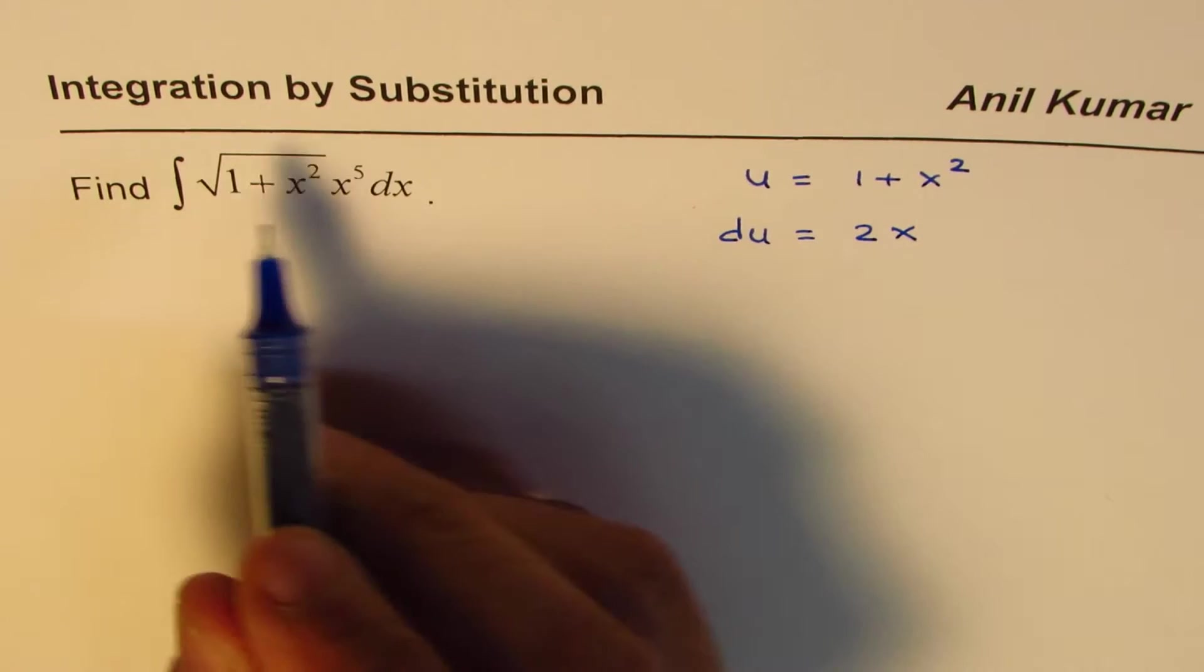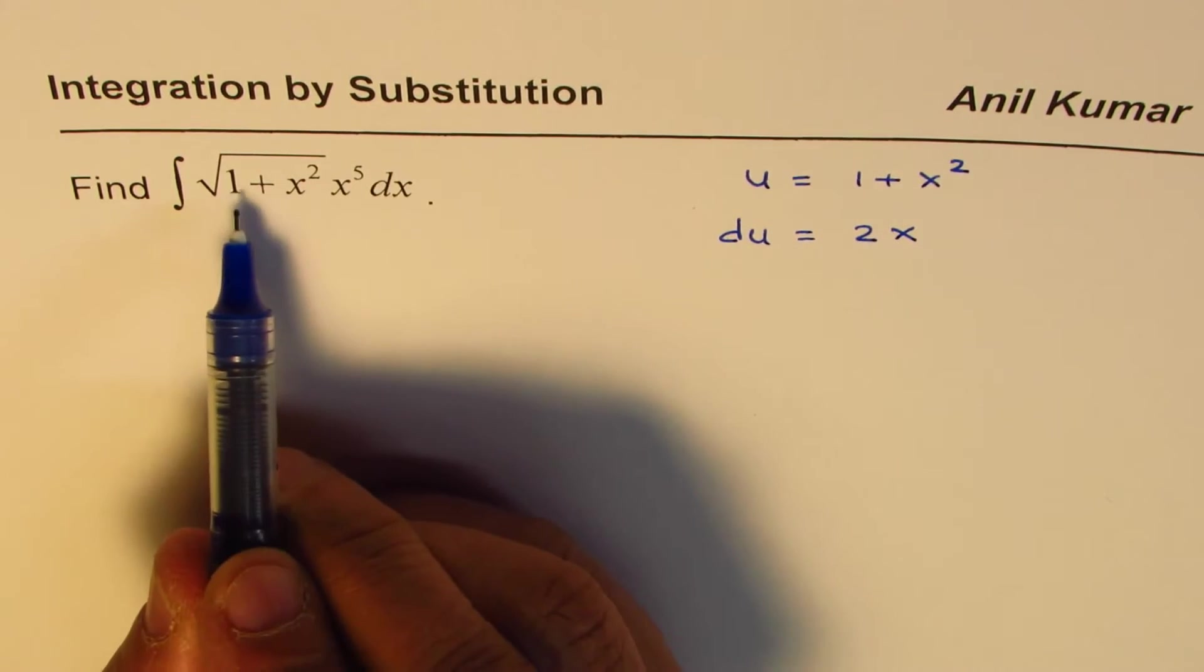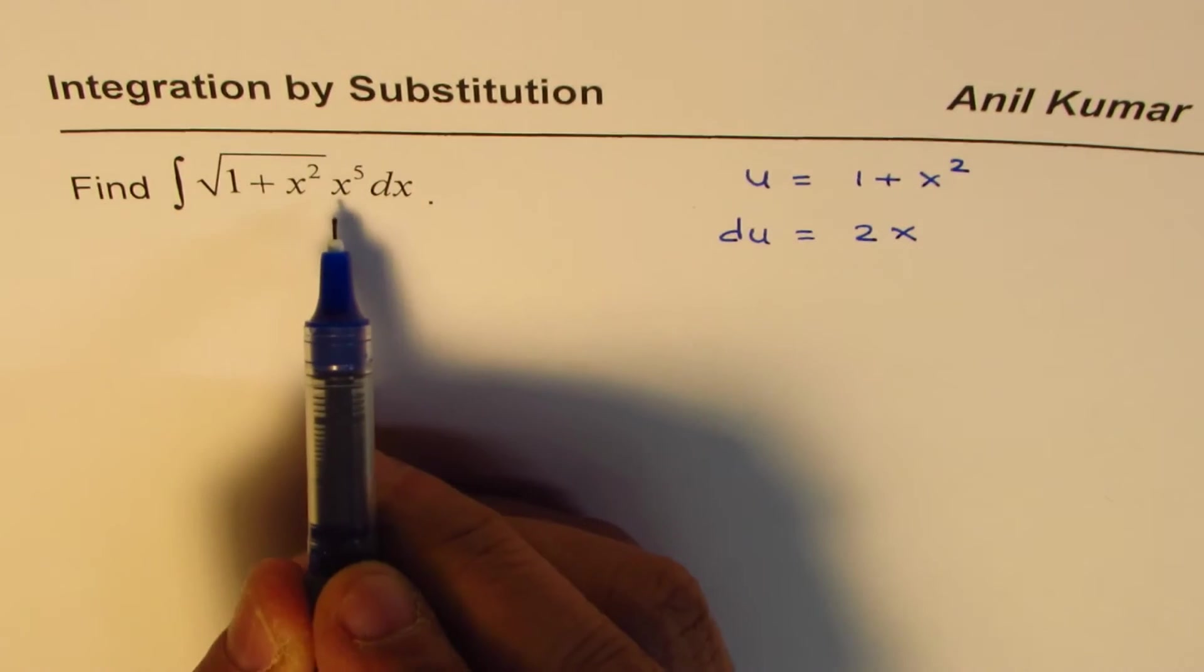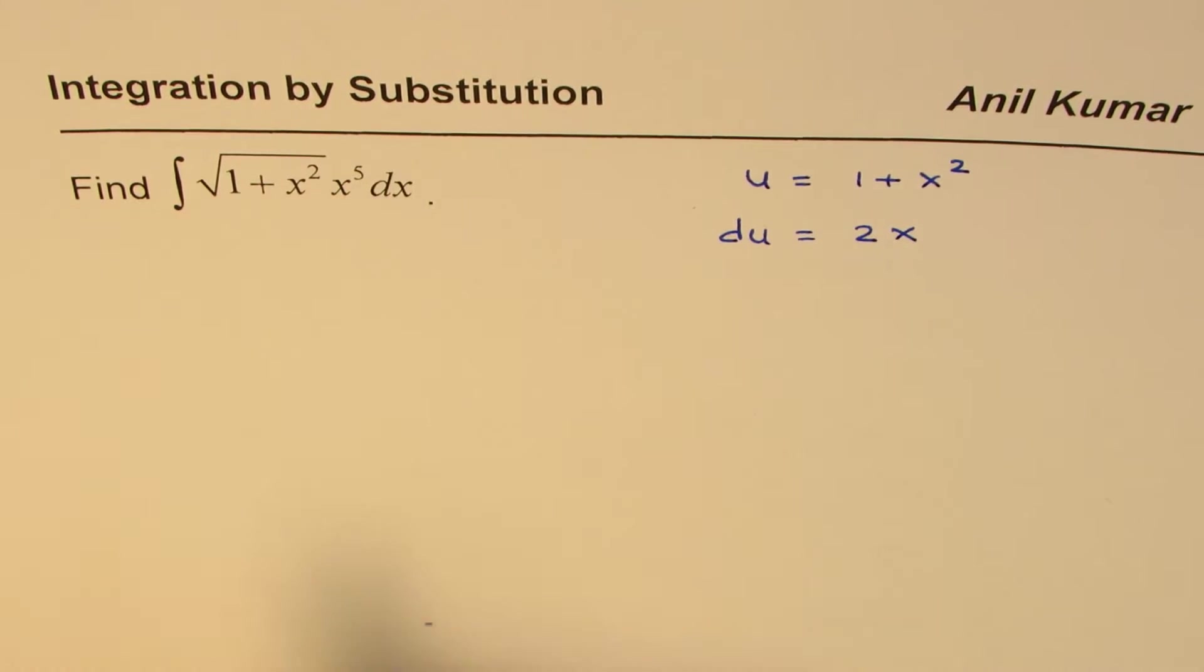Now in this, if I replace the radical part with u, that's okay, but how do I take care of x to the power of 5?